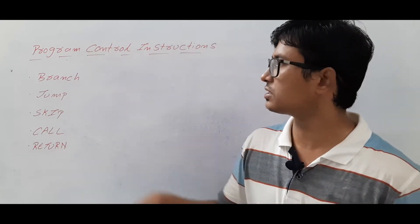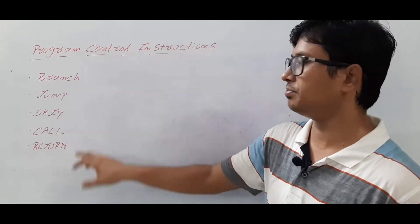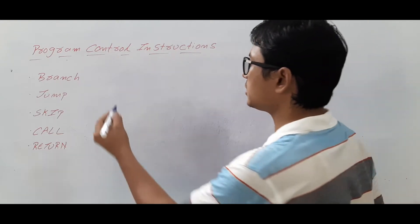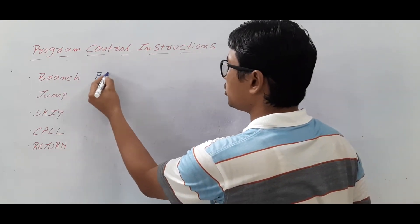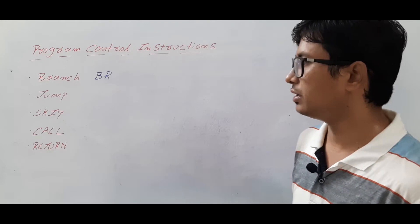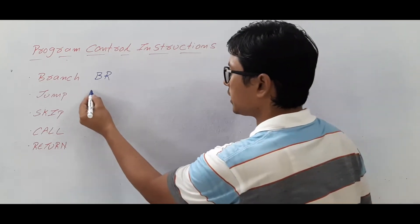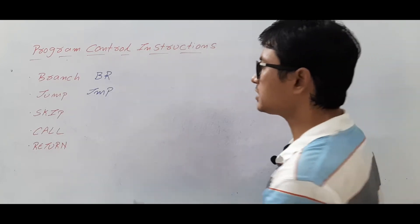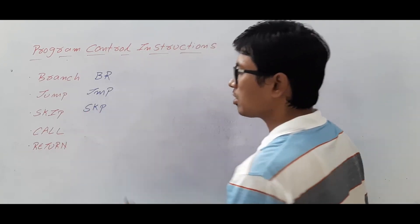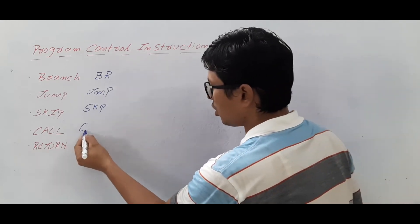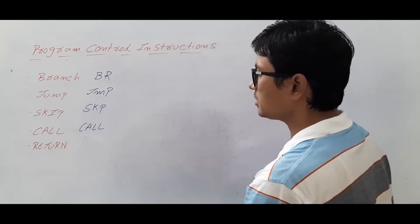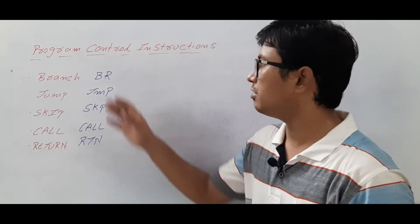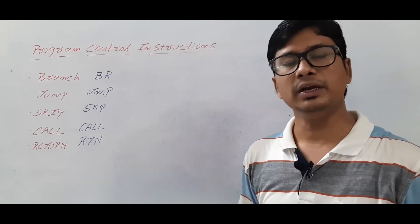The program control instructions are branch, jump, skip, call, and return instructions. The branch instruction can be represented with an opcode as BR. Jump instruction can be denoted as JMP and skip instruction can be denoted as SKP. Call instruction can be denoted as CALL and return instruction can be denoted as RTN. So these are the various opcodes for the program control instructions.